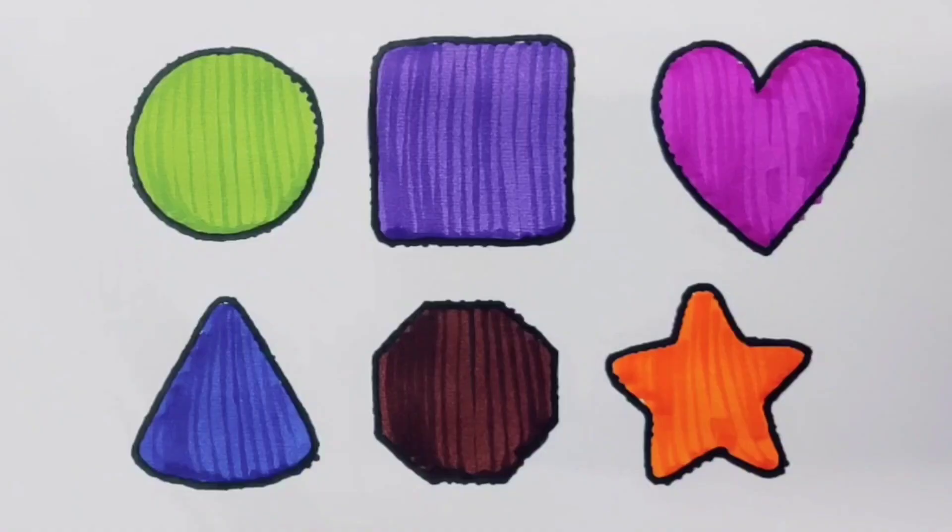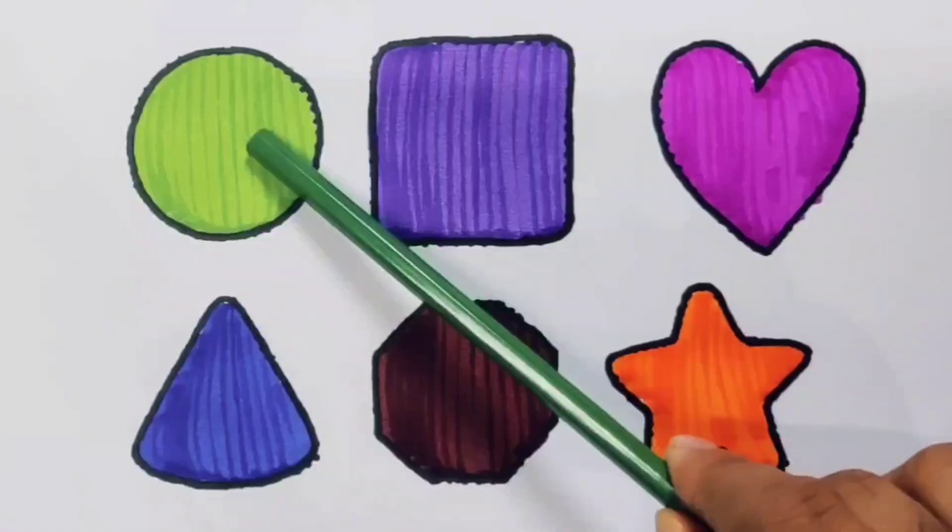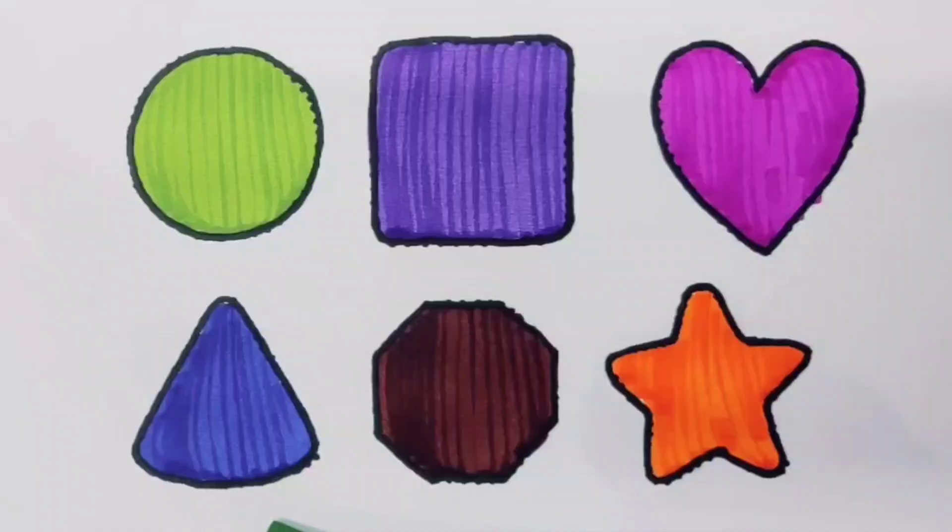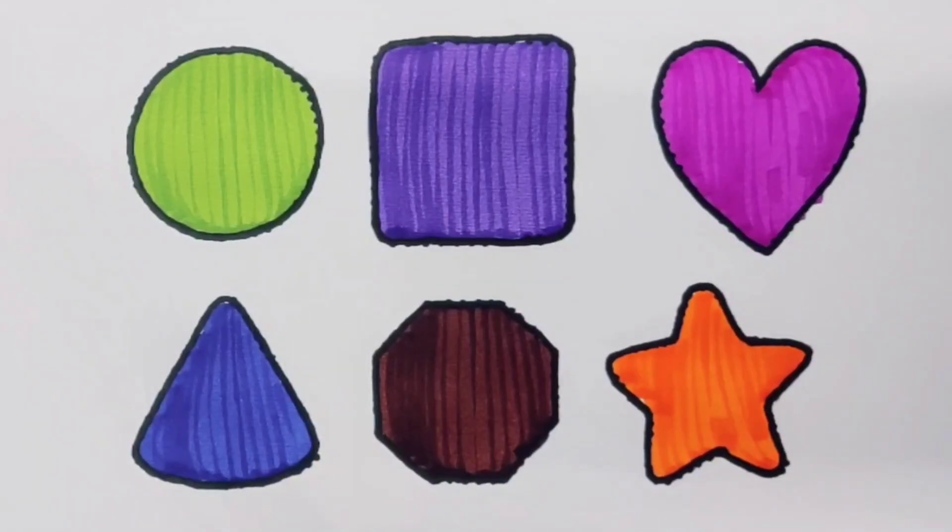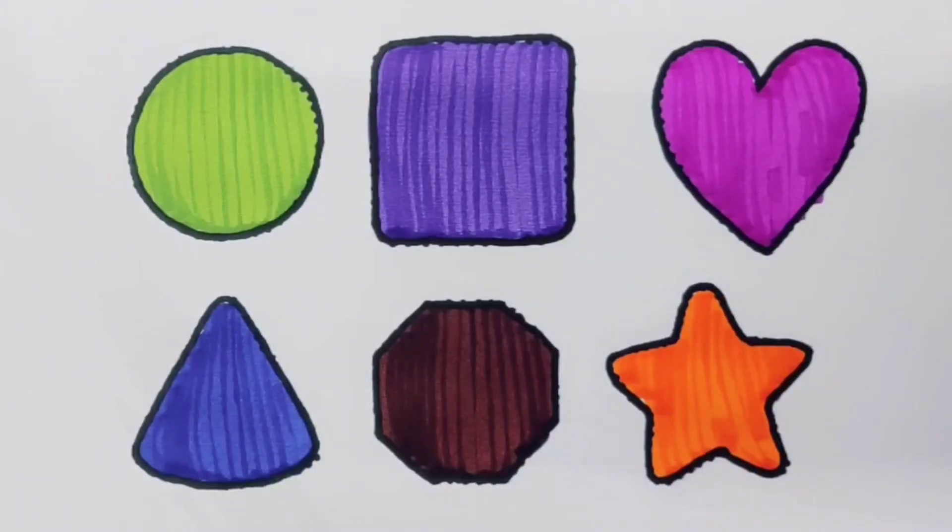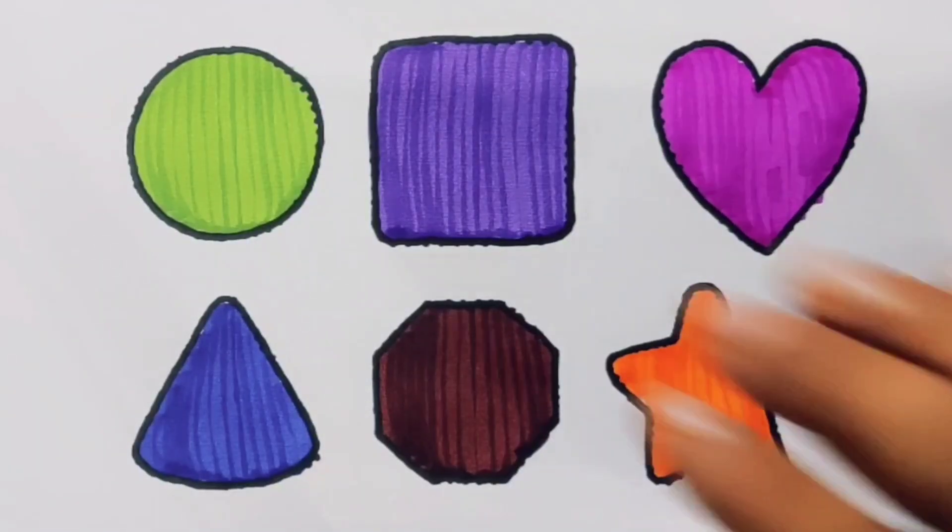What we learned: we learned green color circle, purple color square, pink color heart, blue color triangle, chocolate color decagon, orange color star. Thank you for watching my video. If you like it, please subscribe. Bye.